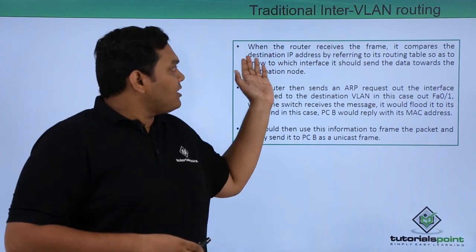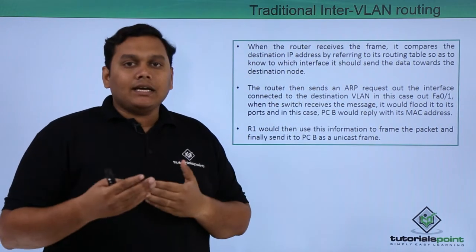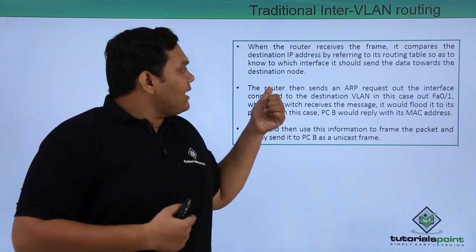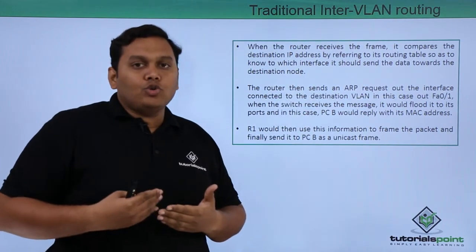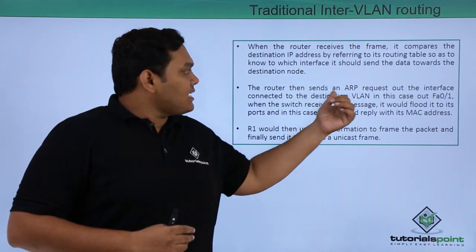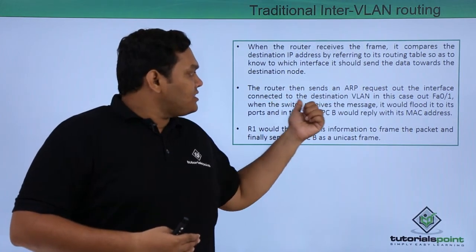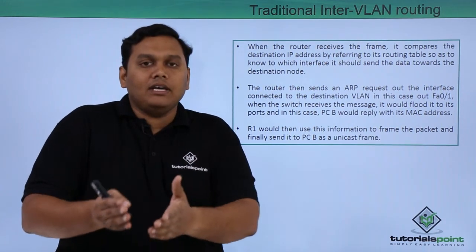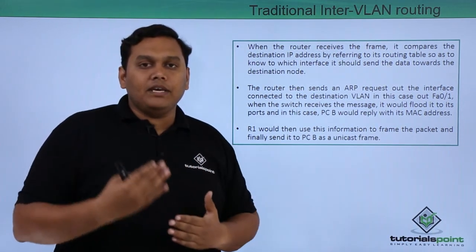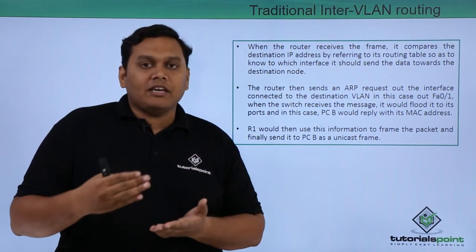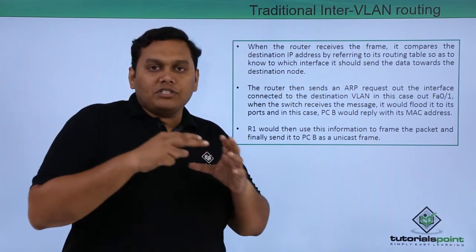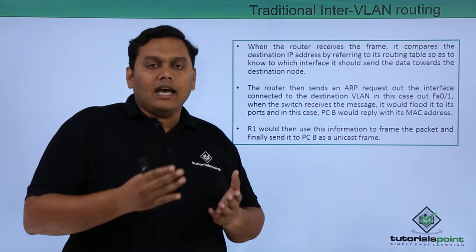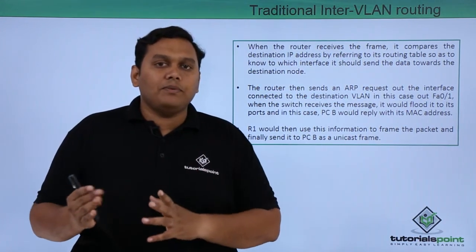When the router receives the frame, it compares the destination IP address by referring to its routing table to determine which interface to use for the destination network. The router then sends an ARP request on the appropriate interface. Traffic is then forwarded out of the FA0/1 interface toward the destination VLAN, and PCB in VLAN 30 receives the traffic based on the destination IP address configured on it. The router forwards the frame to the switch interface, which then delivers it to PCB.